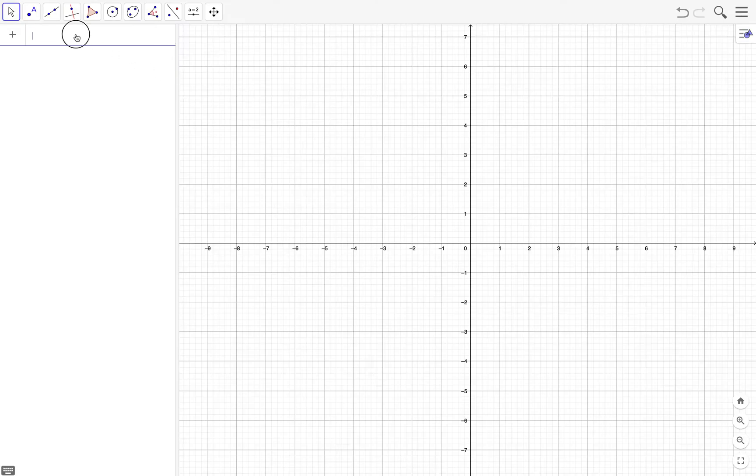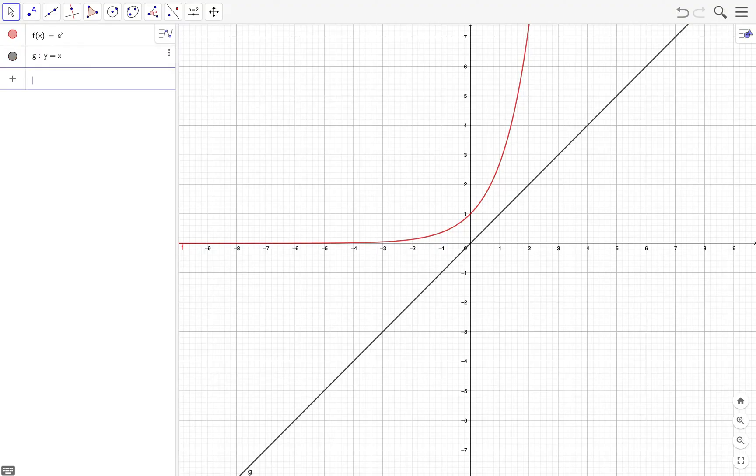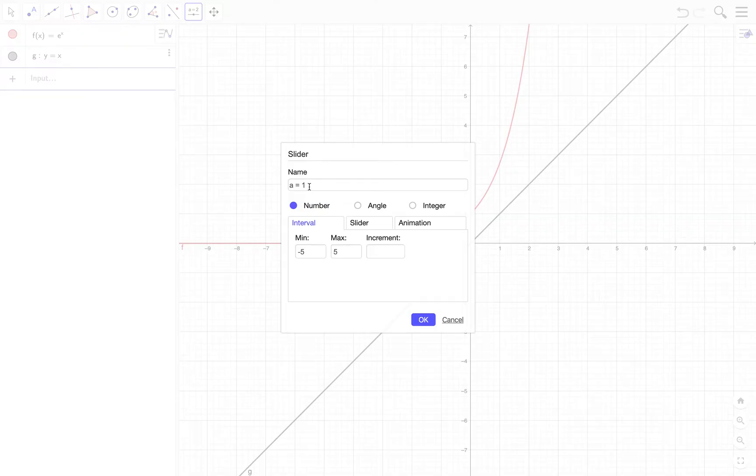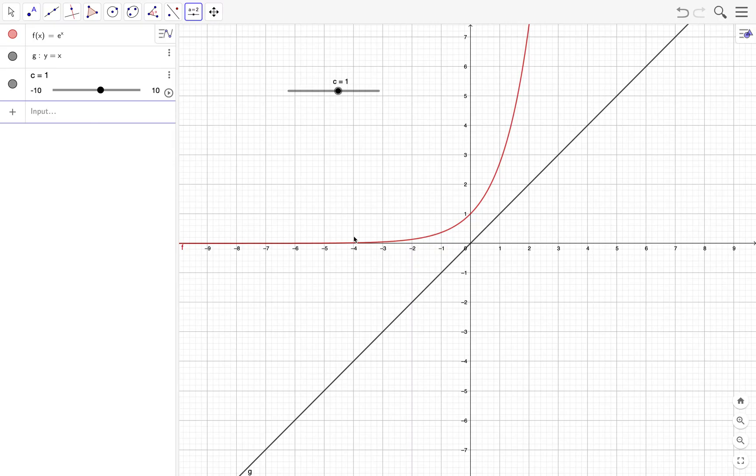So first off, we graph f of x equals e raised to x, and then we also graph y equals x. Then we plot a point with coordinates c, f of c, but we will use a slider for the value of c. Select the slider tool, rename the slider to c, and then set the minimum to negative 10 and the maximum to 10.